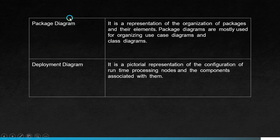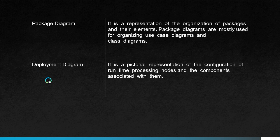The package diagram represents the organization of packages and their elements, and is mostly used for organizing use case diagrams and class diagrams. The deployment diagram is a pictorial representation of the configuration of runtime processing nodes and the components associated with them — showing how nodes are processed at runtime.